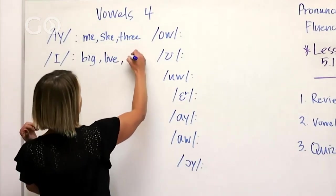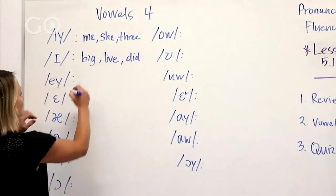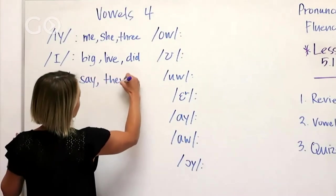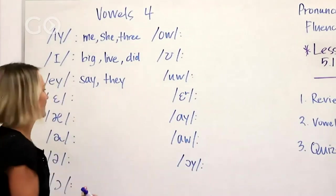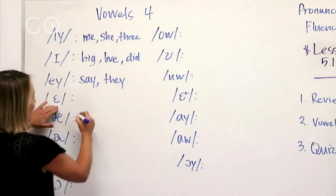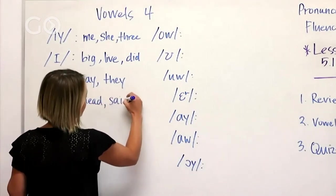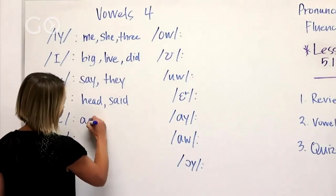Long A, so say, they. As we think of more we'll just continue to add them up here. Here's the E so we've got like head, said.